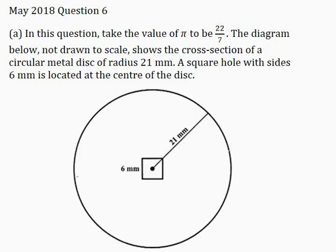In this video I'll be solving May 2018 question 6, part A. In this question, take the value of pi to be 22 over 7. The diagram below, not drawn to scale, shows the cross-section of a circular metal disk of radius 21 mm. A square hole with sides 6 mm is located at the center of the disk.